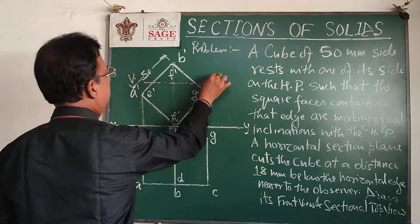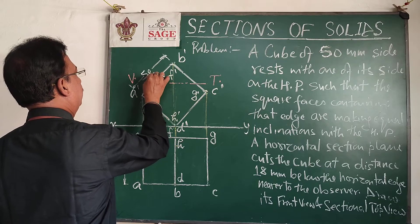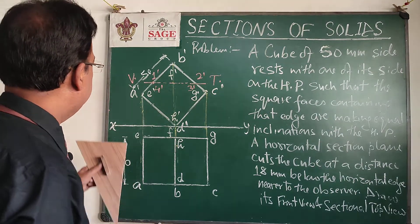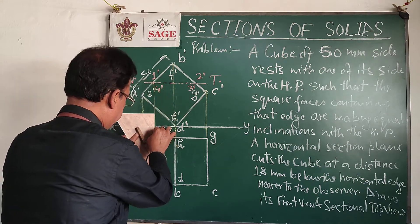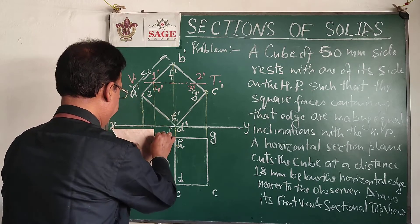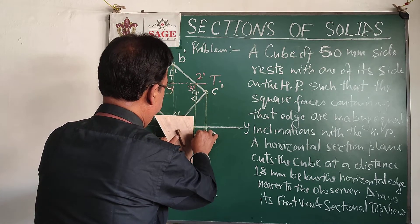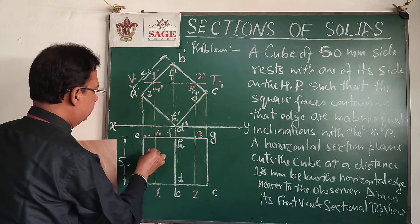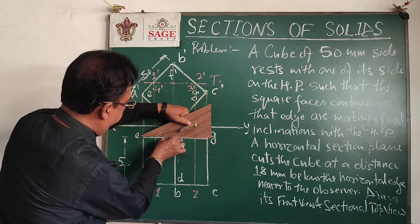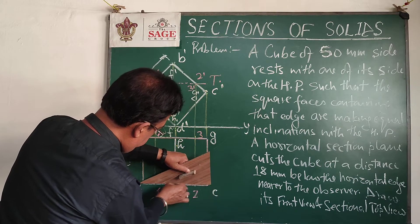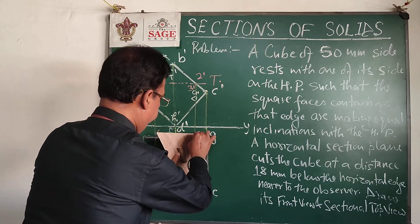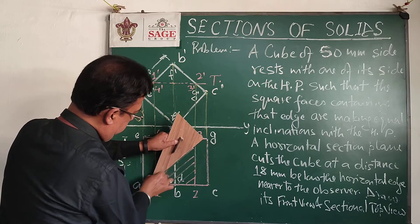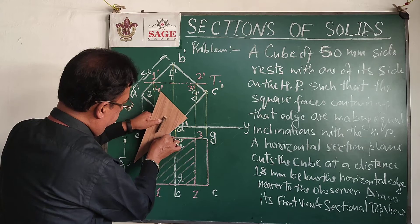This will be the VT of the section plane. The intersection points are labeled: 1', 2', 3', and 4'. From these four points we drop perpendiculars to easily get the corresponding points in the top view — this is point 1, this is 2, this is 3, and this is 4. This complete figure will be the sectional top view.